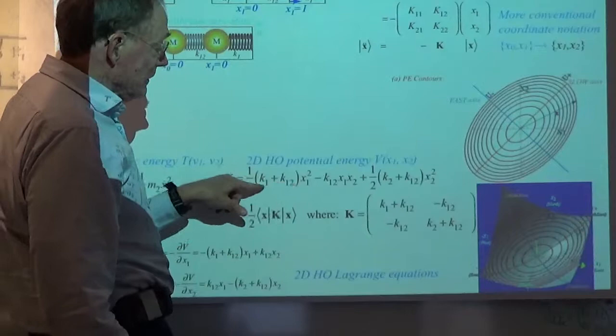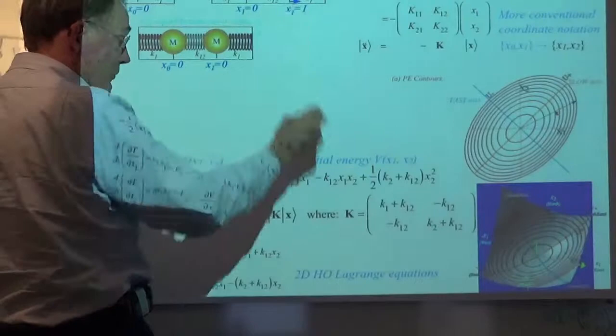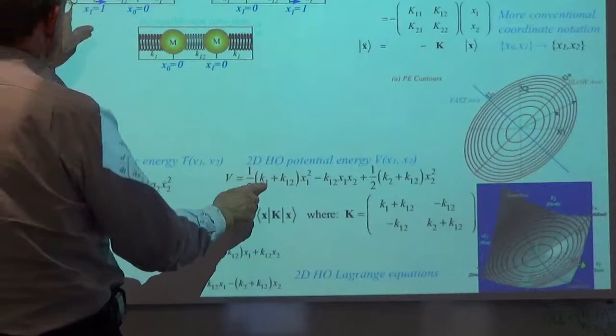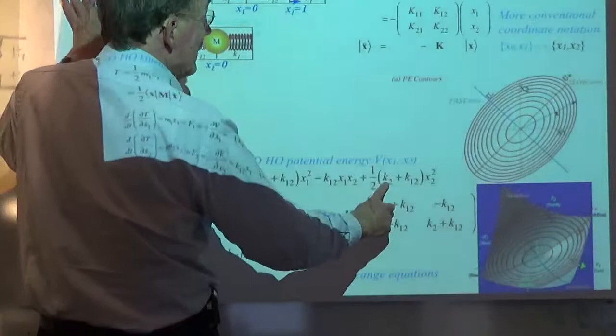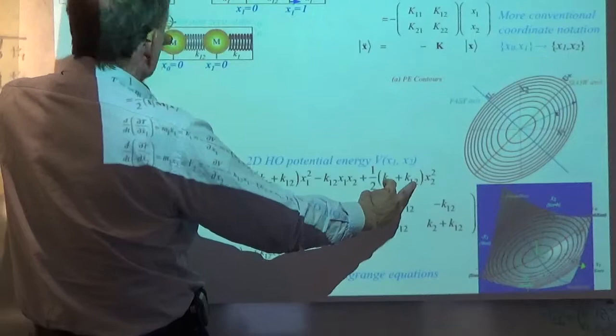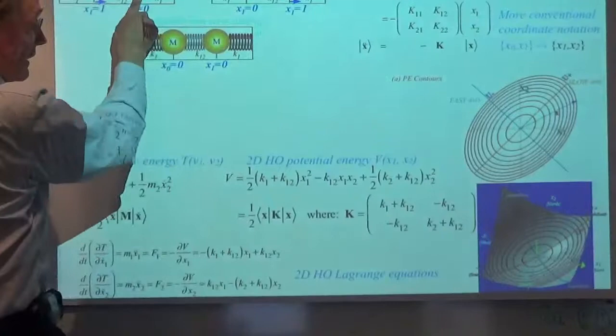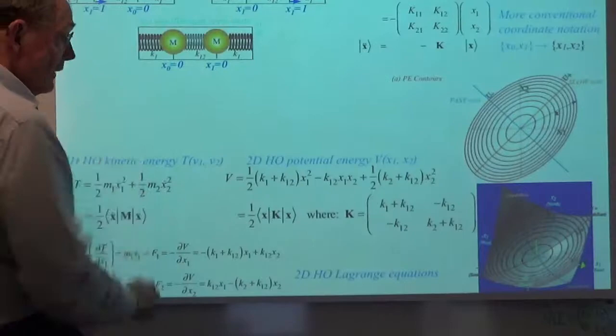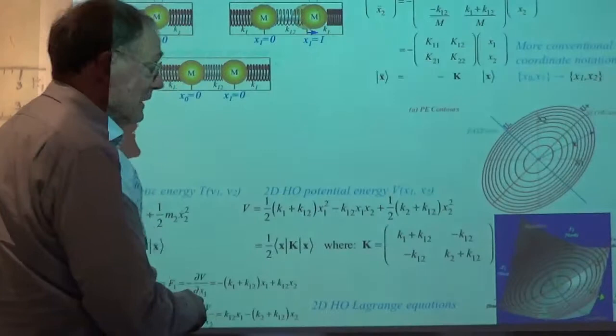In a classical mechanics course, you'd write the kinetic energy as one-half mv squared for the two masses, and the potential as one-half times the spring constants multiplying x1 squared, then x2 squared. For this system, it's k1 plus k12, and the other eigenvalue involves k2 plus k12. We'll be doing unsymmetrical ones later on — that's what the power stuff is about. Right now I have k2 equal to k1.